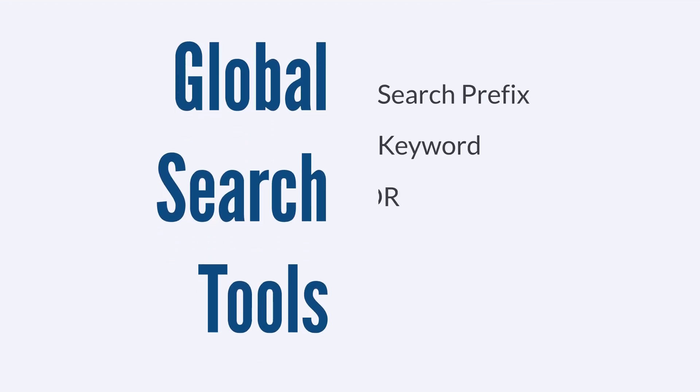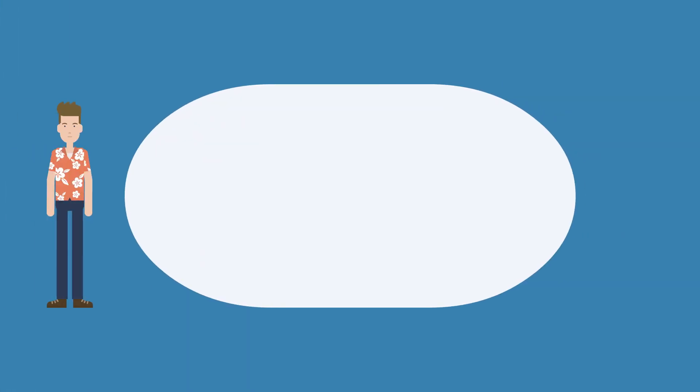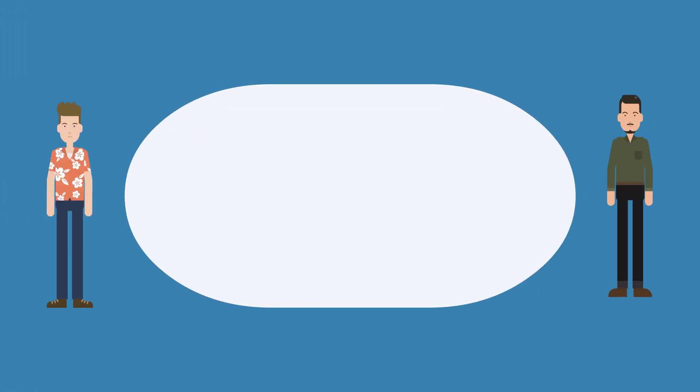Another tool is OR. Inserting OR into your search allows you to search for multiple keywords at once. For example, suppose you want to pull up employee records for all the employees named either Joe or Bob. Your search would be something like EMP colon Joe OR Bob.